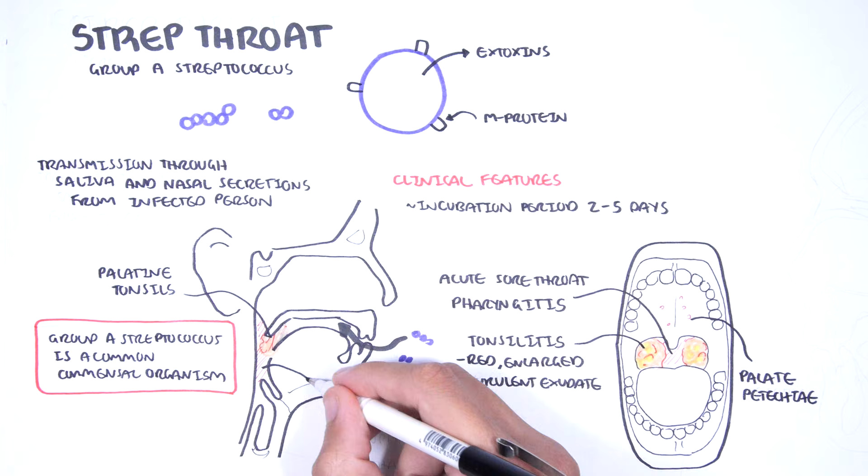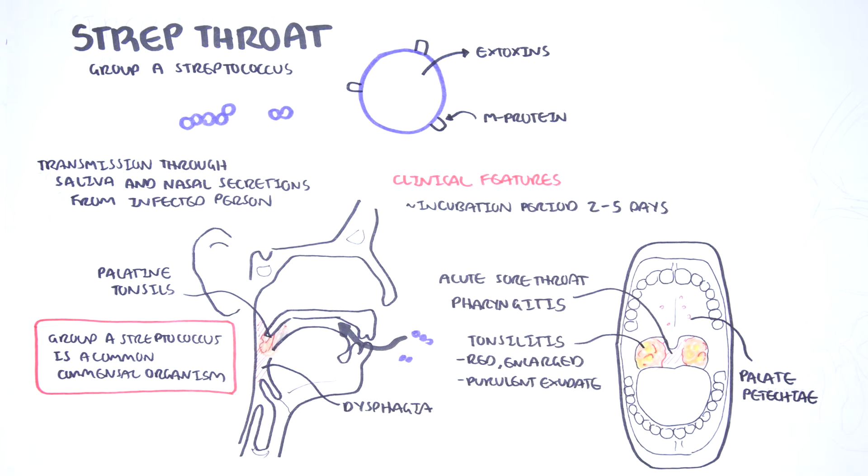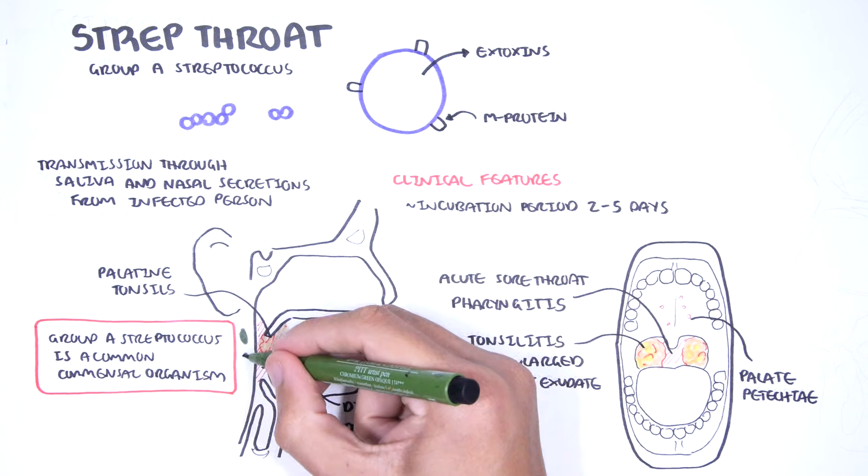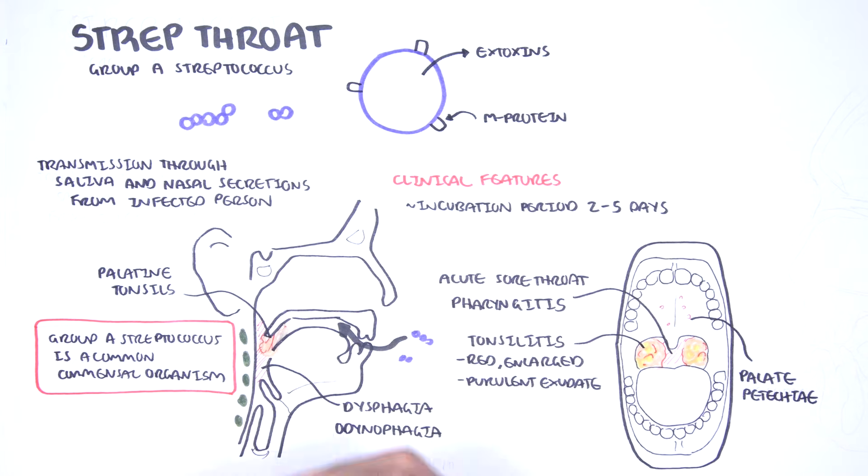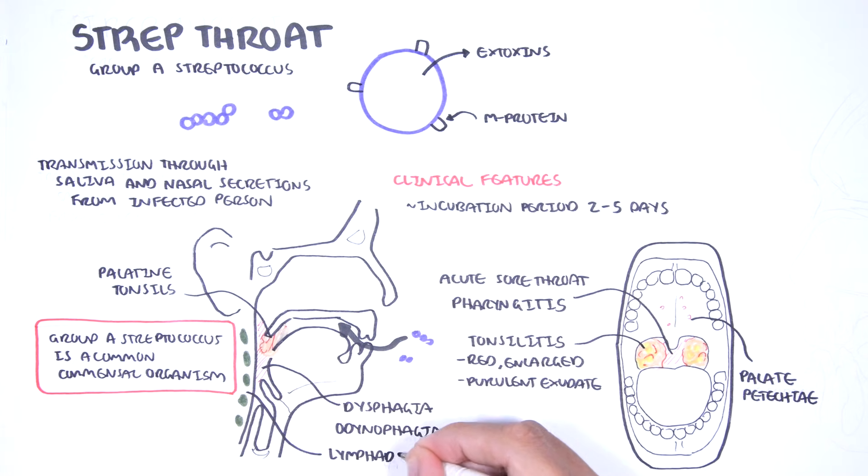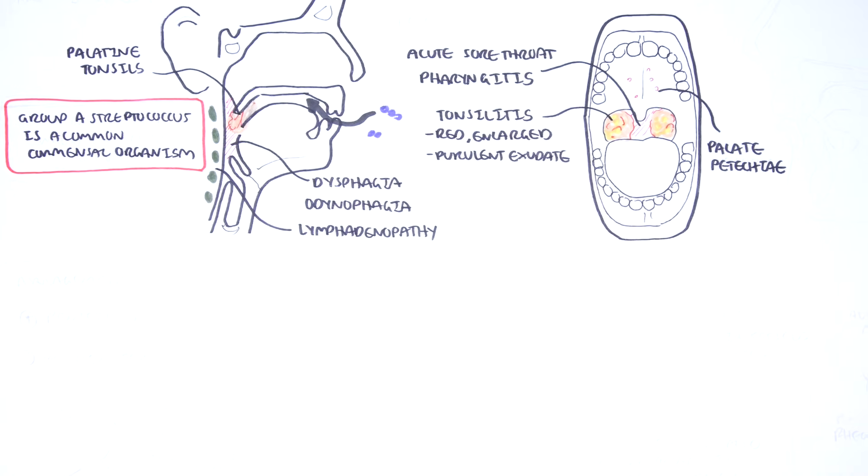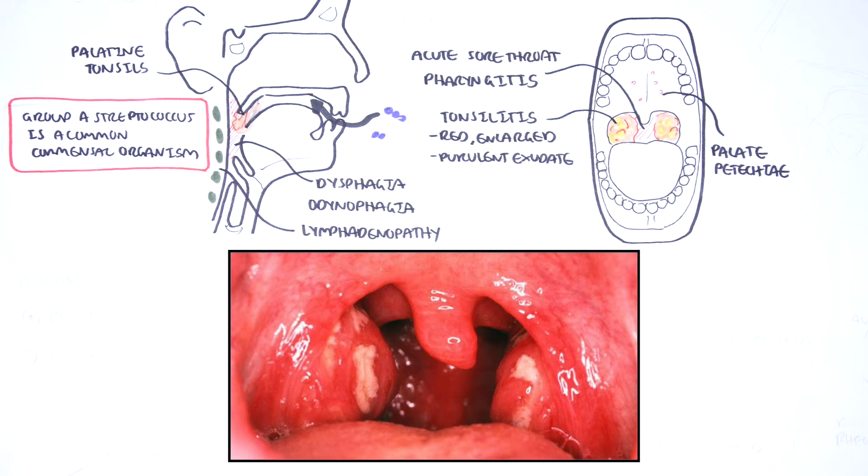Other features of Group A Streptococcus tonsillitis include dysphagia, difficulty swallowing, odynophagia, pain when swallowing, and tender cervical lymphadenopathy. On physical examination, the pharynx is red. Tonsils are red and enlarged with purulent exudate.